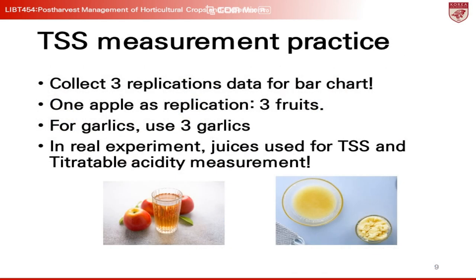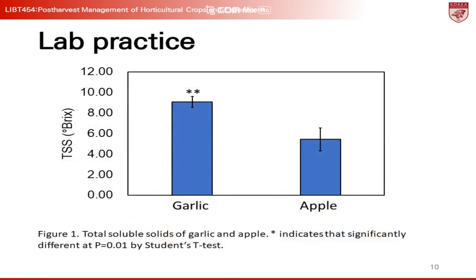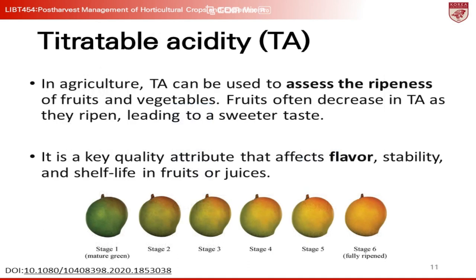In today's lecture, we will measure the total soluble solids (TSS) in apple and garlic. Which do you think will be higher? We might assume that the apple's TSS would be higher because it is sweeter than garlic. Let's test our hypothesis and see if our guess is accurate. Using the TSS data, we will create a bar graph. After performing a t-test in Excel, we will mark any significant differences with an asterisk. To avoid bias, the y-axis values are intentionally misrepresented. This activity will also serve as a practical lesson in basic data input in Excel and how to conduct a t-test. We will also learn about titratable acidity (TA), which indicates sourness.